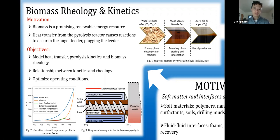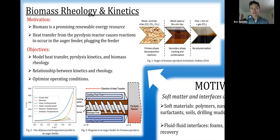Biomass products are a promising renewable energy resource that can be used in combustion engines. Biomass is treated at high temperatures in an inert atmosphere to produce crude bio-oil in a process called pyrolysis. Pyrolysis reactions occur in three main stages as shown in the first figure. Biomass undergoes decomposition reactions, cracking, and condensation of the bio-oil vapors.